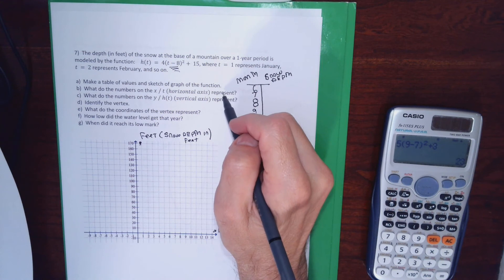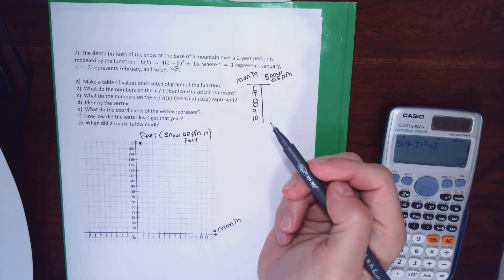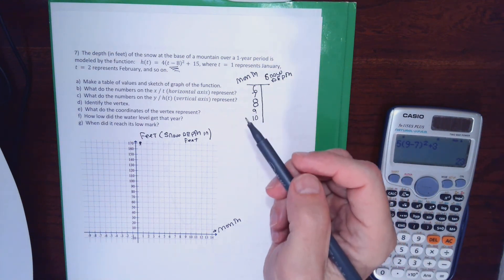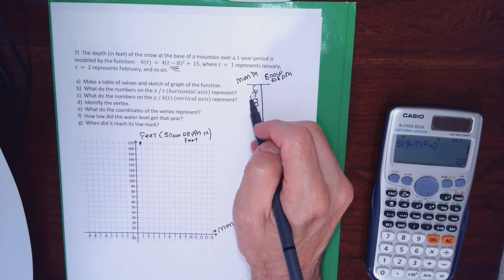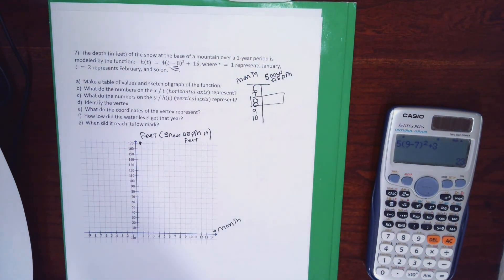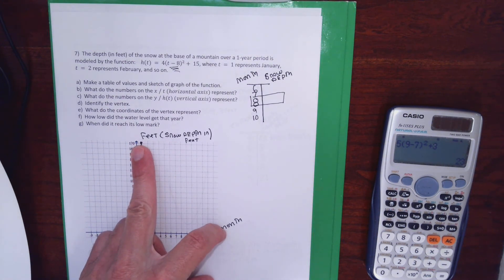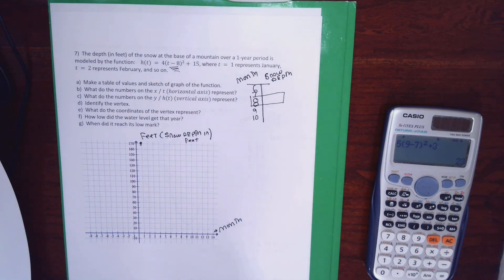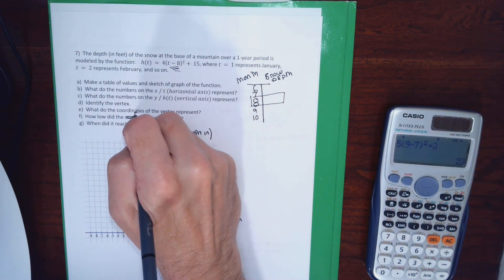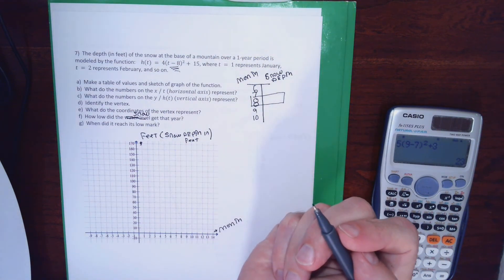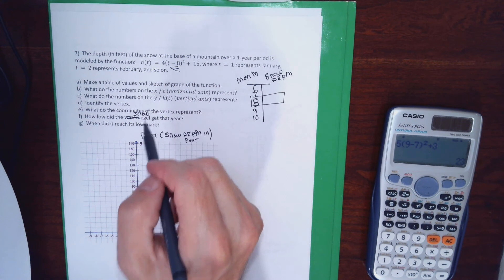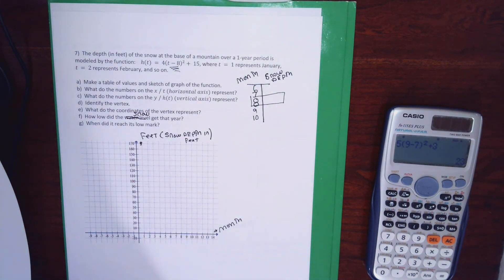The numbers on the horizontal axes, again, represent months. The number on the Y axes represent feet. But more specifically, how many feet of snow are at the base of a mountain. The vertex for part D is going to be buried in the middle of my X column. And we should know that the vertex represents the 8, it's going to represent the month of the year. The Y is going to represent the amount of snow at the base of the mountain during that month, or at least the average amount during that month. And then, oh, this shouldn't say how low did the water get. How low did the snow, I'll change that, get this year. And when did it reach its mark. So I changed the words of the problems, but I didn't change it all the way through. So how low did the snow get that year. And you should be able to answer those questions, hopefully without a lot of misery.